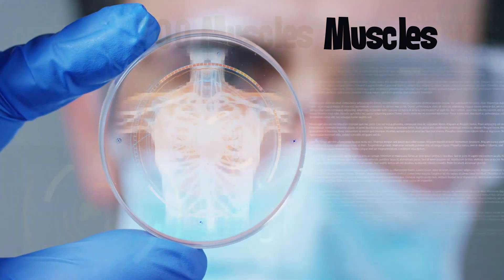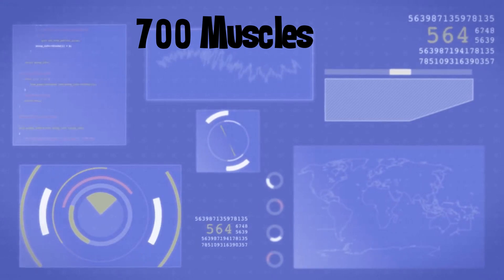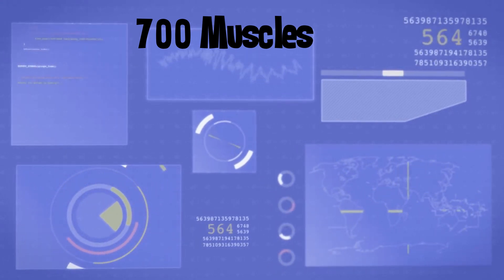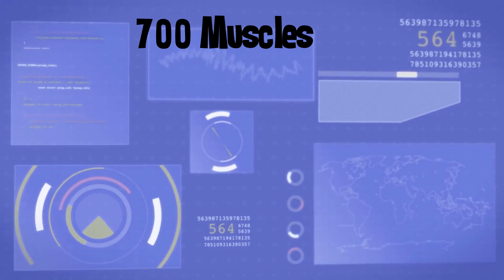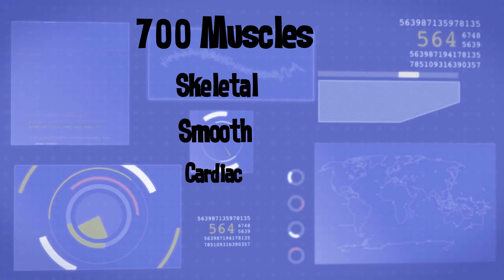Our body has approximately 700 muscles. These 700 muscles can be divided into three types: skeletal, smooth, and cardiac.